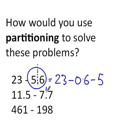With this one, again, something very similar, split it there. I'd do 11.5, take away 0.7, and then take away 7.